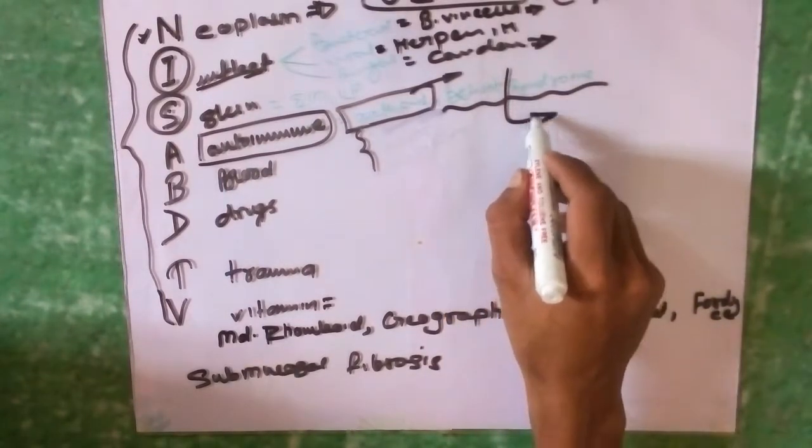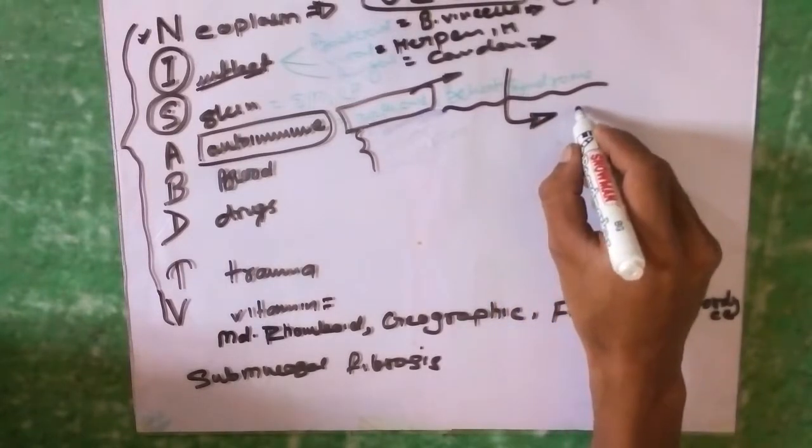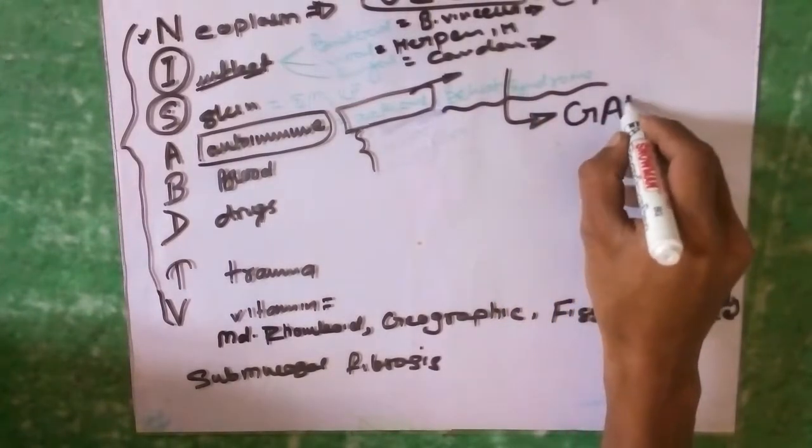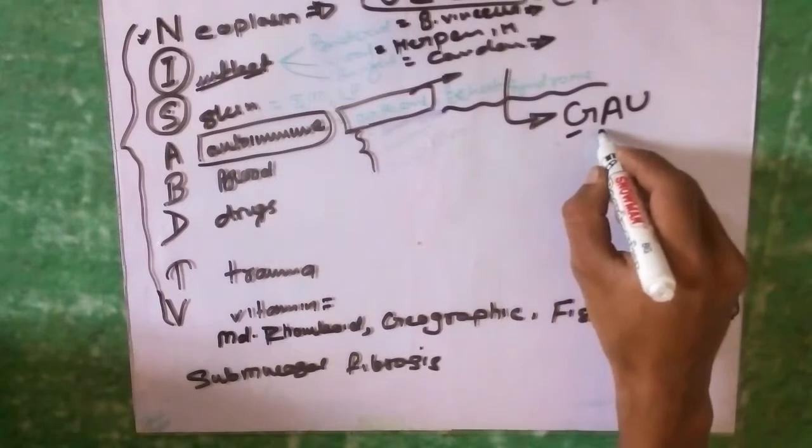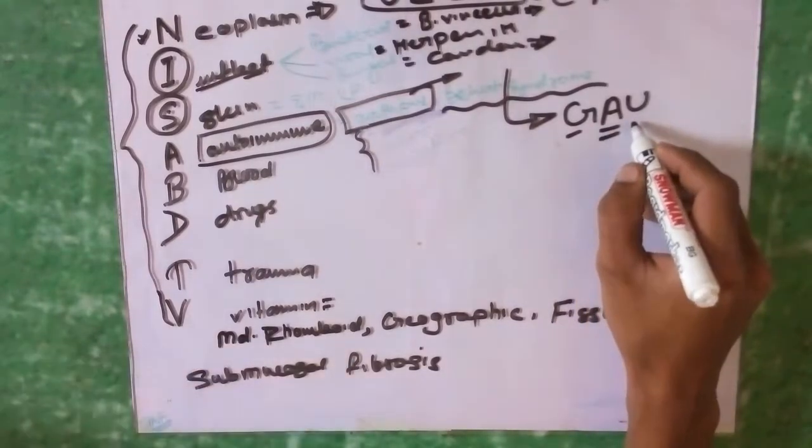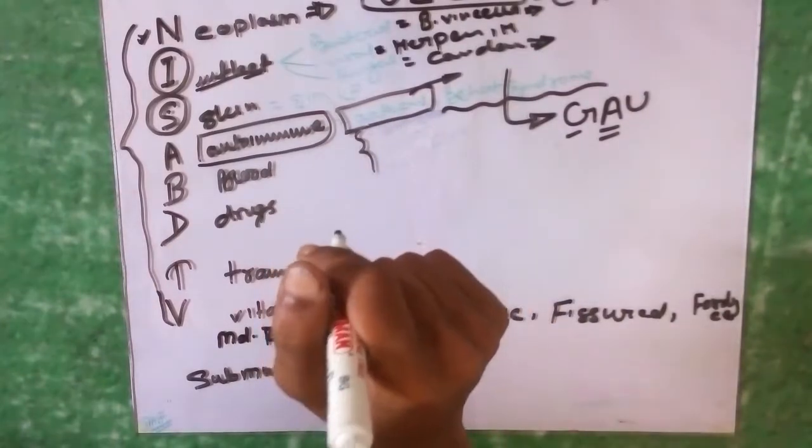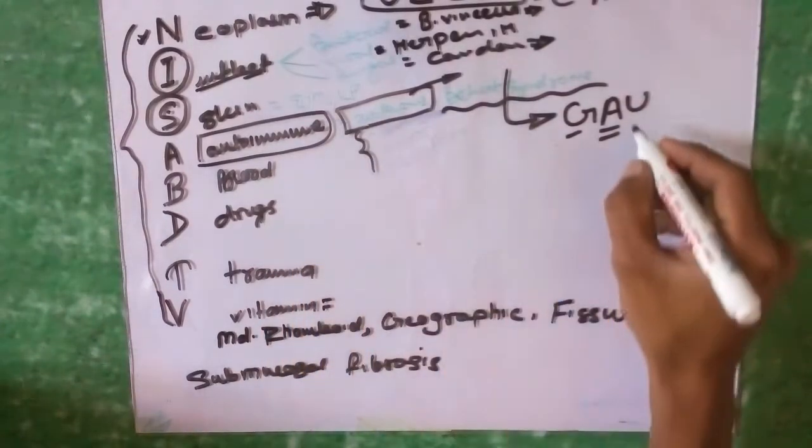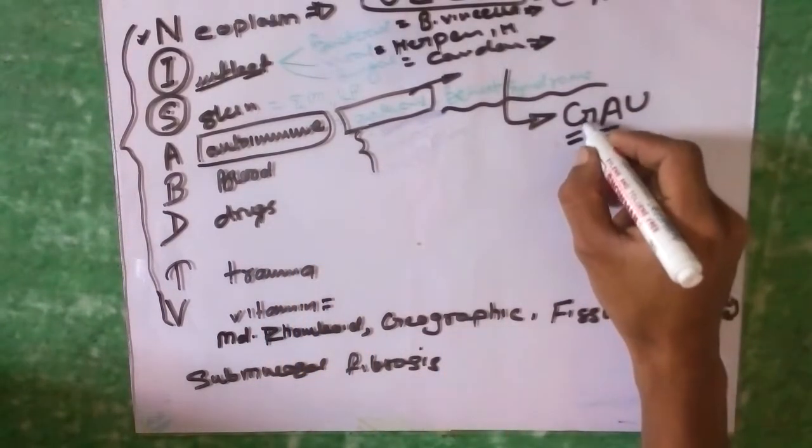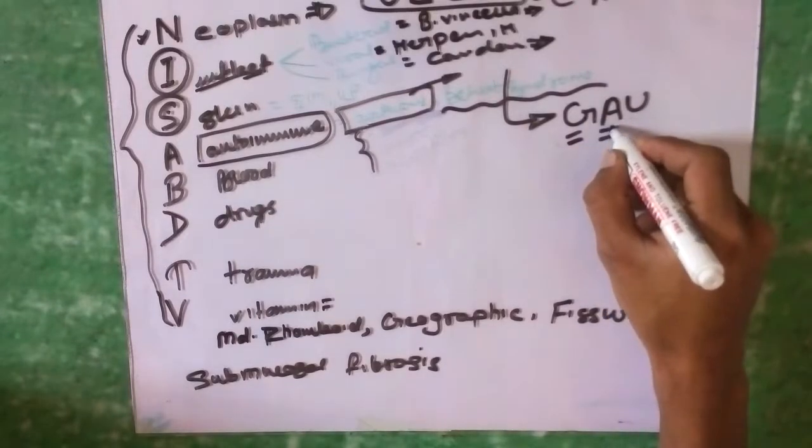Behcet's syndrome is a collection of symptoms which consists of three components: G-A-U, genital ulcer, aphthous ulcer, and uveitis. This is Behcet's syndrome.